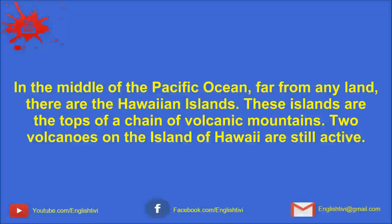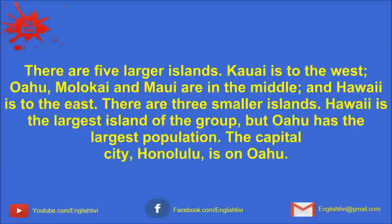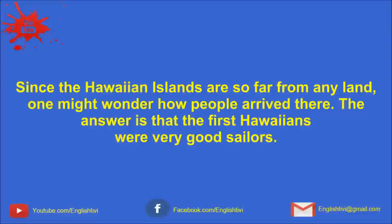In the middle of the Pacific Ocean, far from any land, there are the Hawaiian Islands. These islands are the tops of a chain of volcanic mountains. Two volcanoes on the island of Hawaii are still active. There are five larger islands. Kauai is to the west. Oahu, Molokai, and Maui are in the middle. And Hawaii is to the east. There are three smaller islands. Hawaii is the largest island of the group. But Oahu has the largest population. The capital city, Honolulu, is on Oahu. Since the Hawaiian Islands are so far from any land, one might wonder how people arrived there. The answer is that the first Hawaiians were very good sailors. They traveled thousands of miles from other islands in the Pacific in canoes.